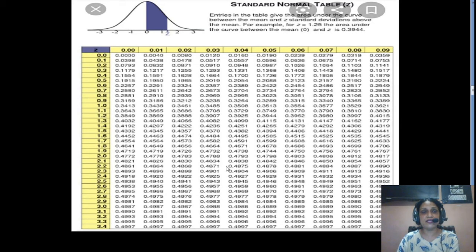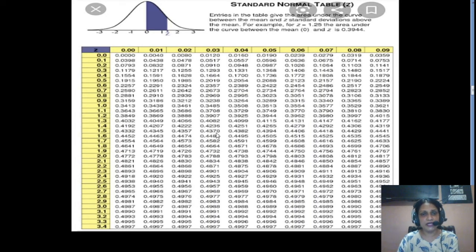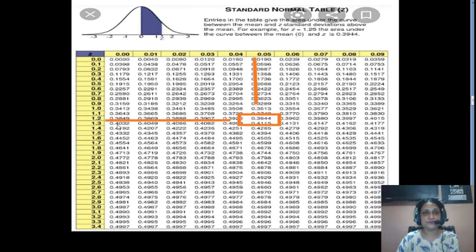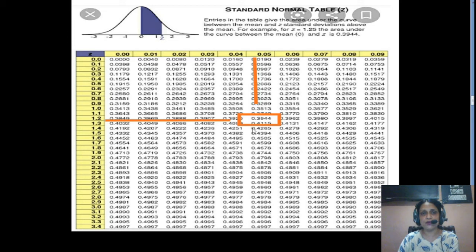From the Z table, we look up Z = 1.25 by taking 1.2 from the row and 0.05 from the column, giving a value of 0.3944. This Z table is easily available on the internet, and there is also a Z calculator app where you can input the probability and get the Z result.